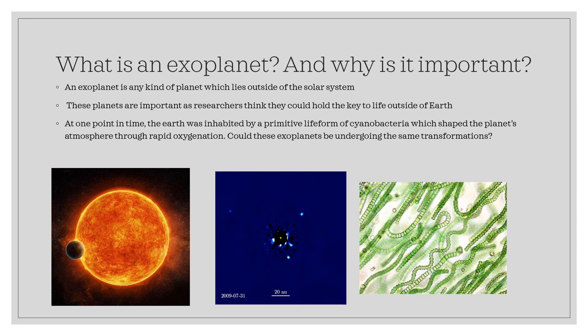So what is an exoplanet and why is it important? An exoplanet is any planet which lies outside of the solar system. These planets are important as researchers think they could hold the key to life outside of Earth. At one point in time, the Earth was inhabited by a primitive life form of cyanobacteria. These cyanobacteria shaped the planet's atmosphere through rapid oxygenation. Could these exoplanets be undergoing the same transformations?